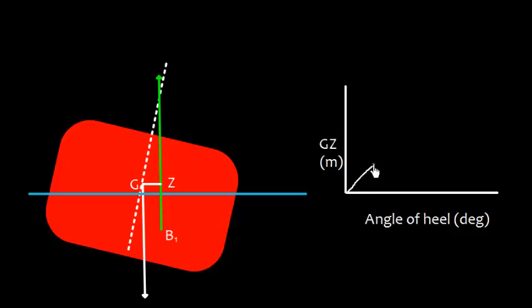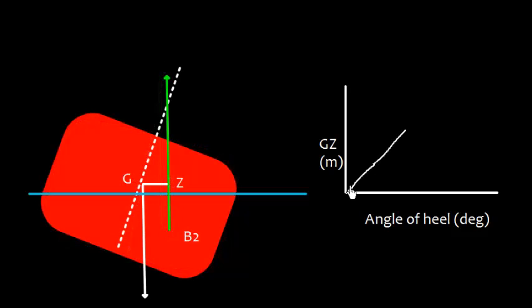Now the vessel heels further. If the vessel heels further, the underwater volume will increase like this, so the center of buoyancy shifts from B1 to B2. That means the GZ will also increase. So here the GZ has increased like this.